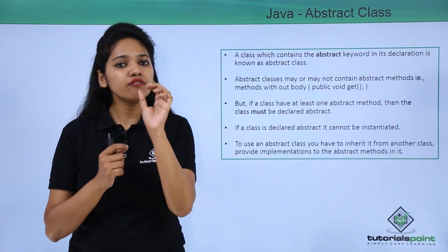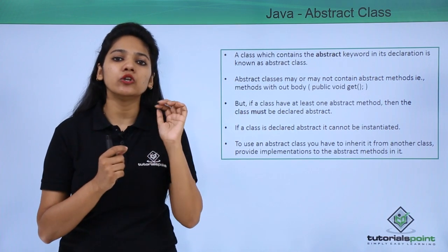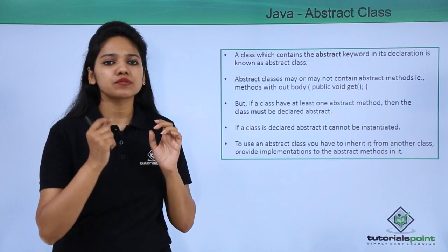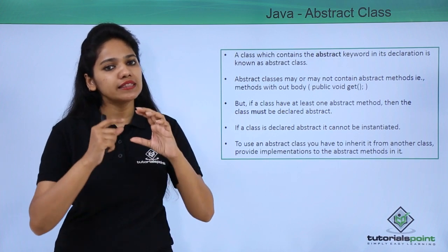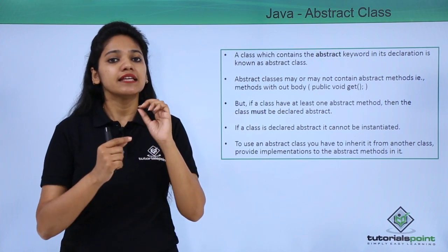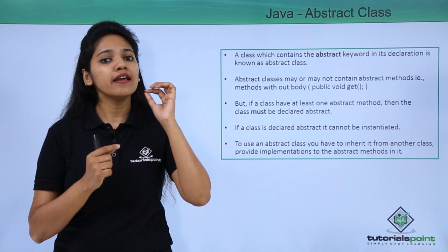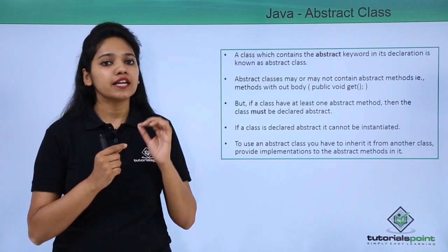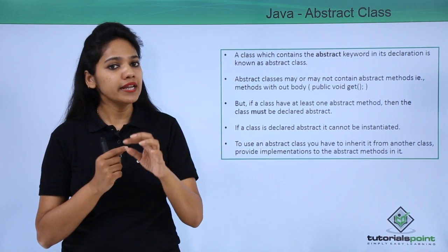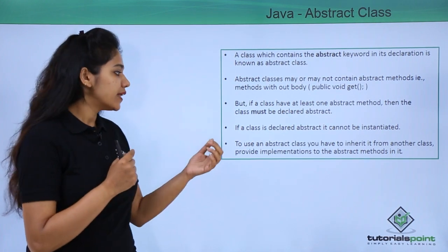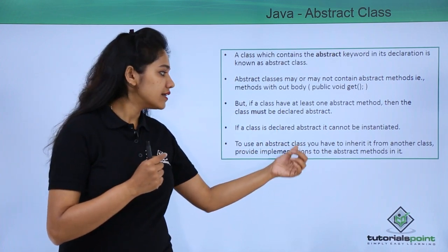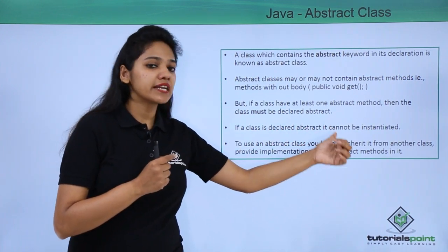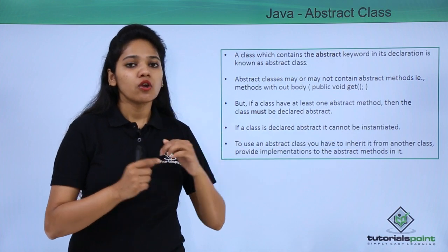If you have created a normal class and define any one abstract method within that class, then that class becomes abstract. If you do not declare it as abstract, it will throw an error. Also, if a class is declared abstract, it cannot be instantiated.